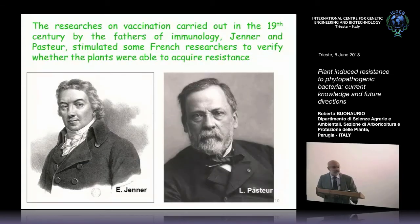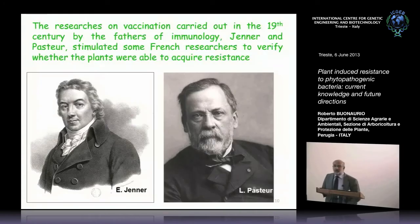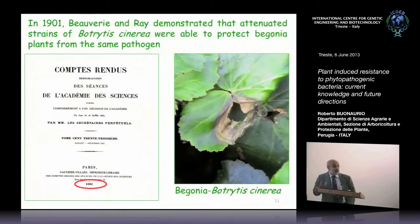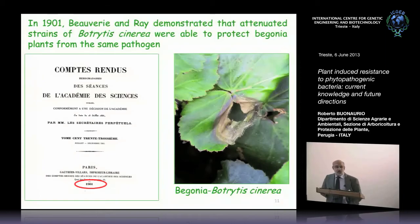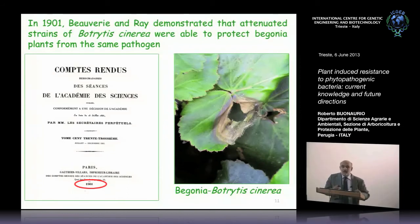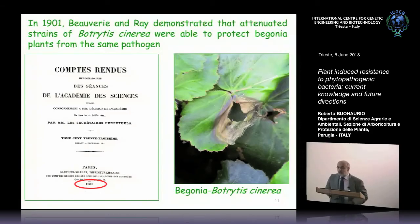Research on vaccination carried out in the 19th century by the fathers of immunology, Jenner and Pasteur, stimulated some French researchers to verify whether plants were able to acquire resistance. In 1911, Beauverie and Ray demonstrated that attenuated strains of Botrytis cinerea, a necrotrophic fungus, were able to protect begonia plants against the same pathogen. They autoclaved the strains and applied them as a soil drench to the roots of begonia, and the plants were protected.